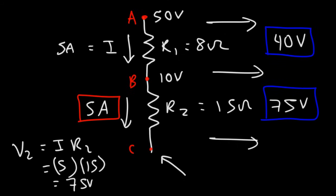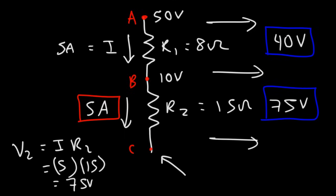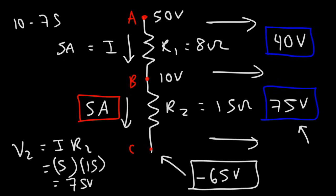Now let's calculate the potential at point C. Current flows from high to low electric potential, so as current flows from A to B, B is lower in potential than A. Current flows from B to C, so C is lower than B. The potential difference between B and C is 75 volts, and B is higher, so C equals 10 minus 75, which is negative 65 volts.